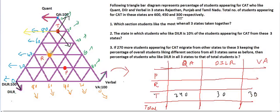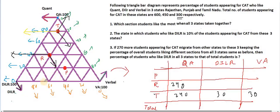Let's go for Rajasthan now. For quant, it is nothing but 40%, and Rajasthan has 600 students — so 40% of 600 is 240. Let's move on to DILR. Reading it: 0, 20, 40, 60% — wait, no, that reading was wrong. 60% is for quant. DILR we have represented as orange: 100, 80, 60, 40 — so 40% of the students like DILR, which is 240.